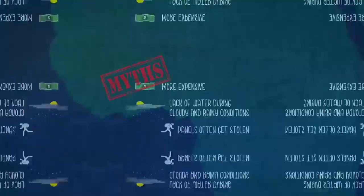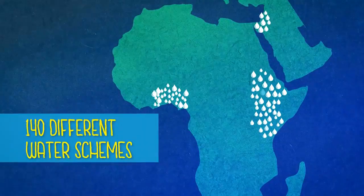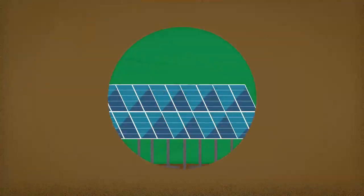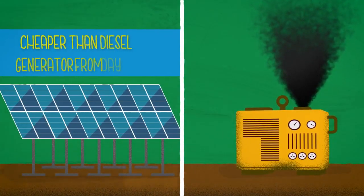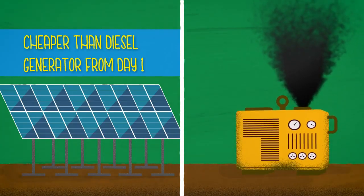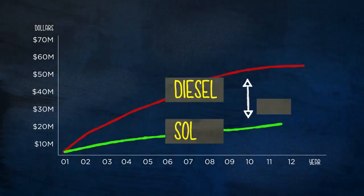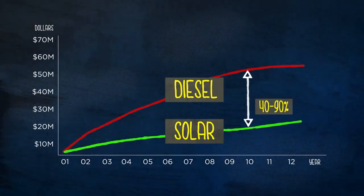By analysing 140 different water schemes, we found that switching to solar will pay for itself within 4 years and in some circumstances, solar is cheaper than a diesel generator from day one. Over the lifetime of these systems, solar will be 40-90% cheaper.